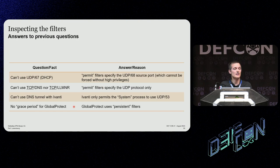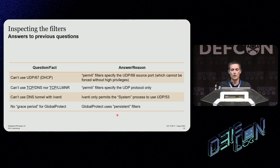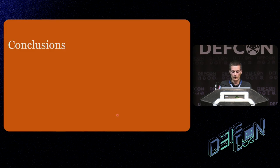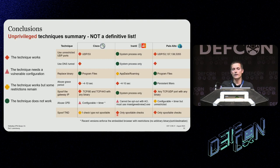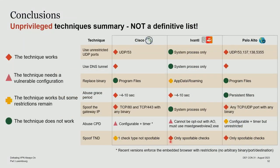For the grace period not observable with Global Protect — it's because Global Protect uses persistent filters, not dynamic filters. The filters are always present, and only when it's satisfied with the connection does it decide to remove them. Looking at the summary table — again, only unprivileged techniques — none of the VPN agents is perfect because they are always vulnerable to at least one of the attacks explained. I also found some hard-coded values, but you don't even need them because most agents are vulnerable to trusted network detection spoofing, which is in my opinion the most important and most flexible attack.